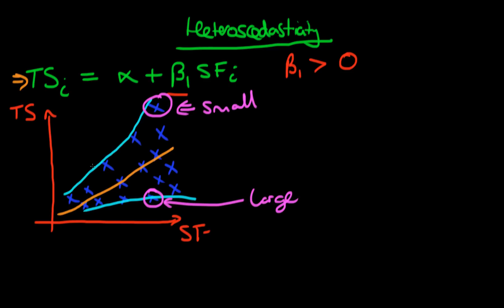So you're going to get a higher variance of points away from the line as school funding increases. So in this case, we've actually omitted an important variable, which is that of the school size.